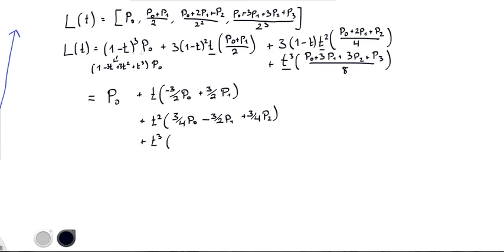So this is for the squared term, and then for the cubed, it's going to involve pieces from all four terms. So let's just write it out. So it's going to be minus 1 eighth P0 plus 3 eighths P1 minus 3 eighths P2 plus 1 eighths P3.